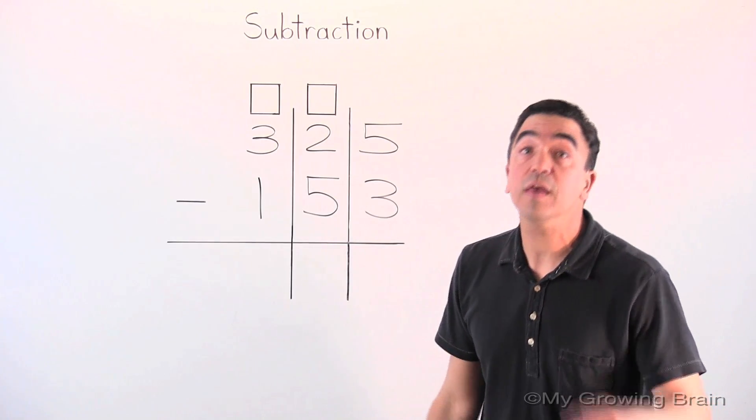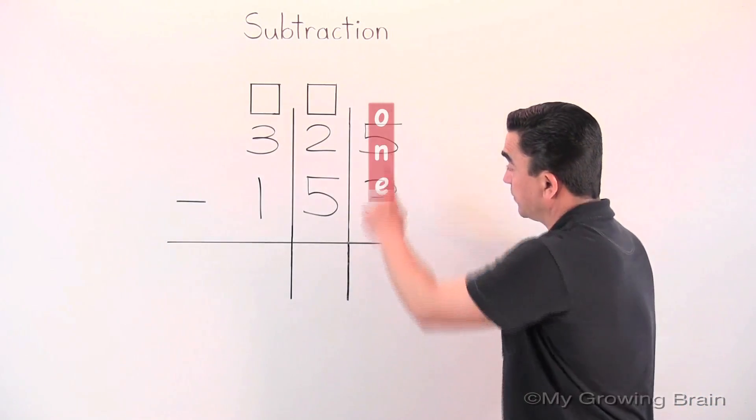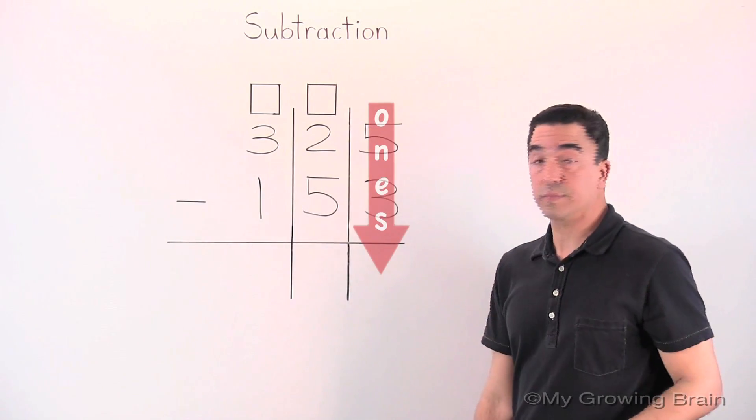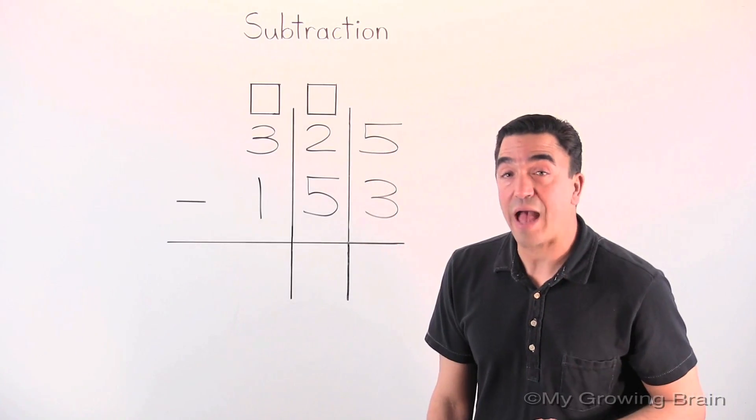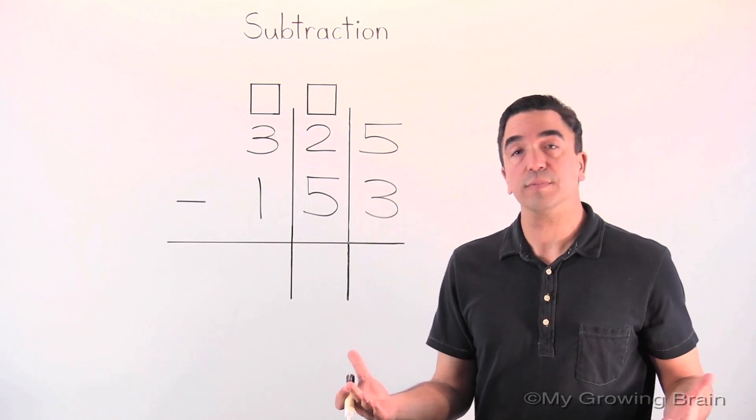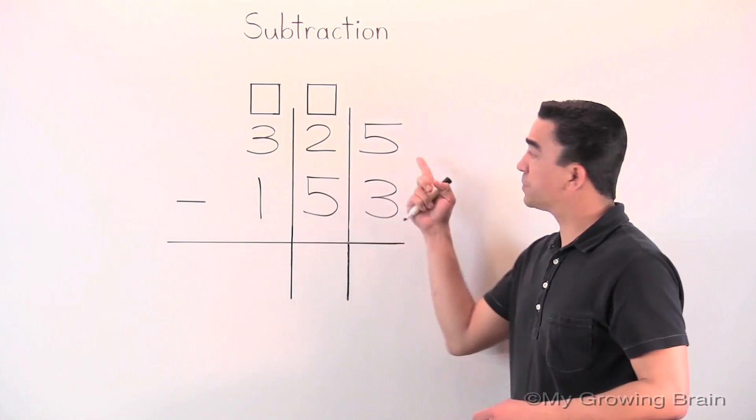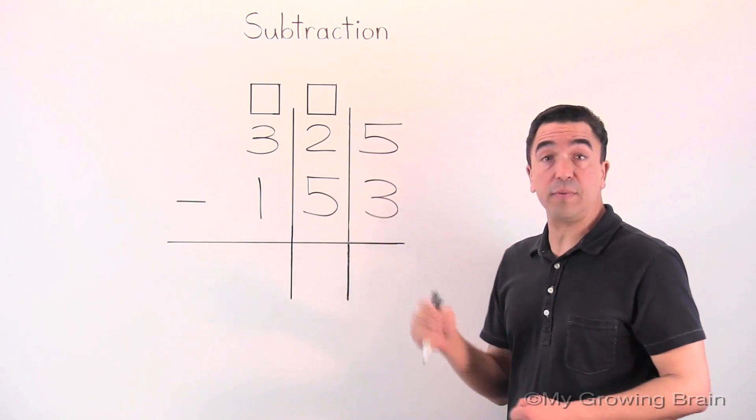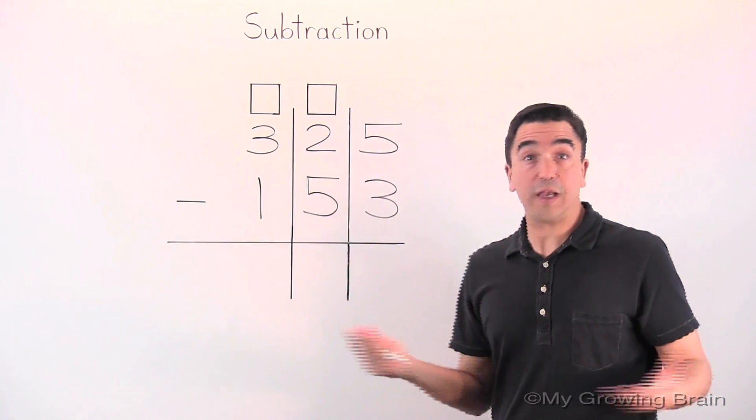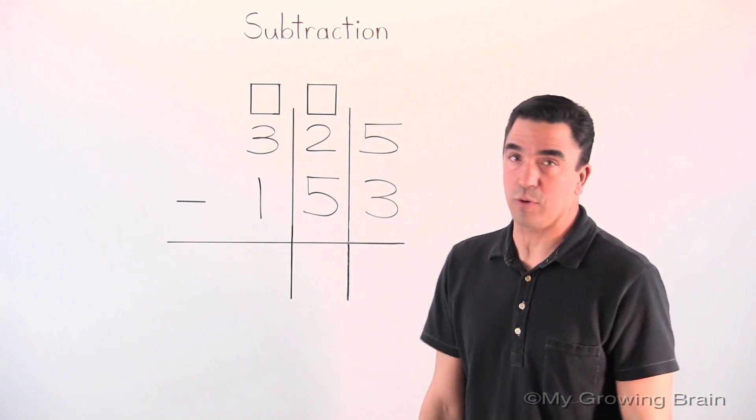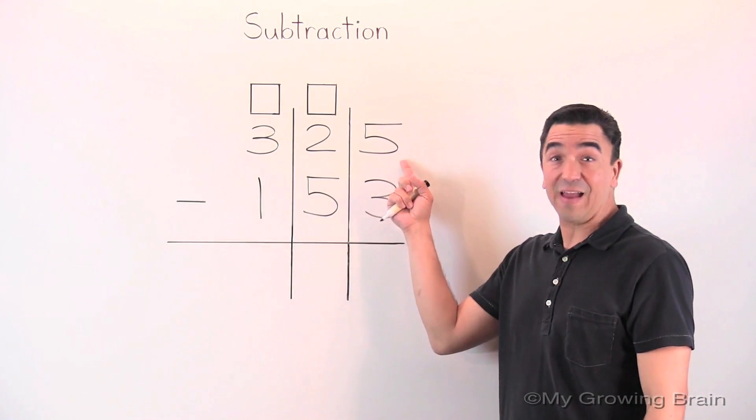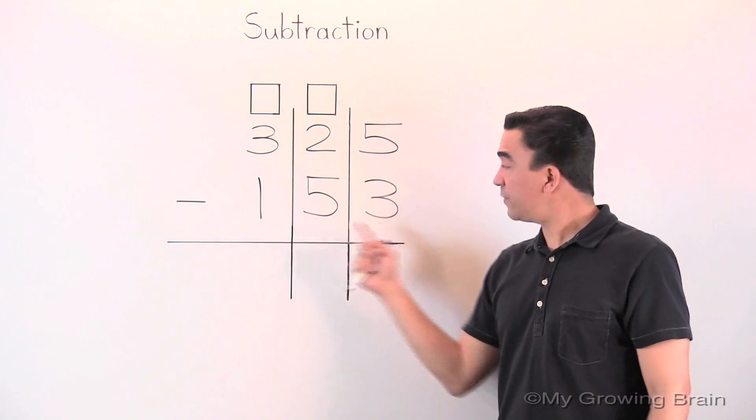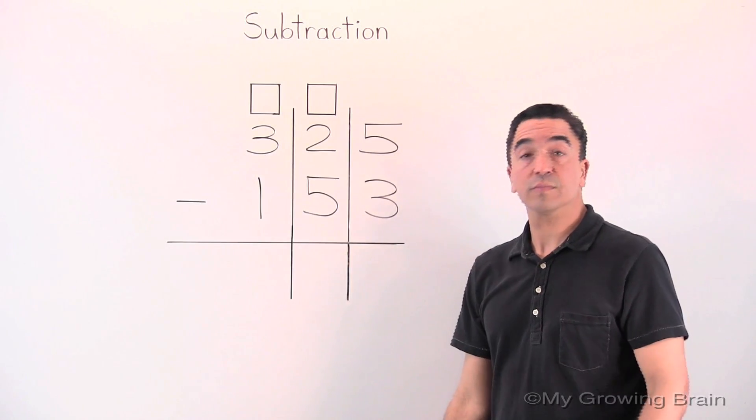All right, let's start in the ones place. Before we subtract, let's see if we need to regroup. Is the top number greater than the bottom number? It is, so we don't need to regroup. Five minus three, two.